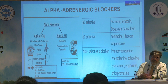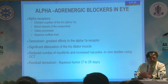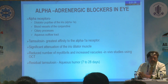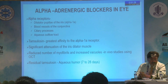Coming to a brief discussion: the alpha adrenergic blockers — alpha-1 and alpha-2 — including Tamsulosin, Terazosin, and Prazosin, are alpha-1 selective. Their effect in the eye is on the blood vessels and the conjunctiva, where Tamsulosin has the greatest affinity to alpha-1 receptors. They lead to a reduced number of myofibrils and increased vacuolation, demonstrated in in vivo studies using OCT. Tamsulosin remains residually in the aqueous humor for 7 to 28 days even after stopping therapy.